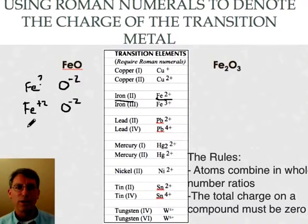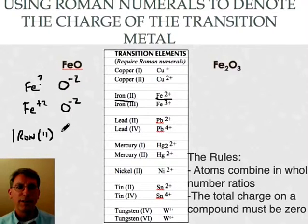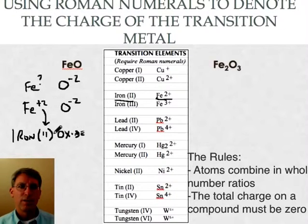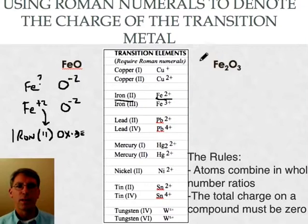So when I name this thing I'm going to need to use my iron two because I have an iron that has a plus two charge. So I'm going to write down iron with a two in parentheses oxide. And again the two is told to me by the Roman numeral.